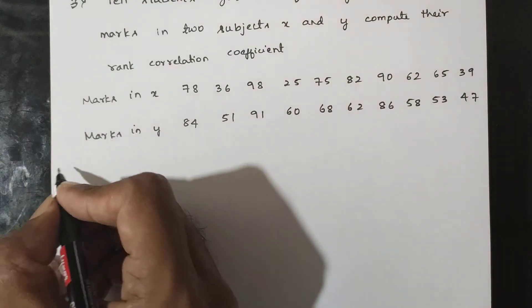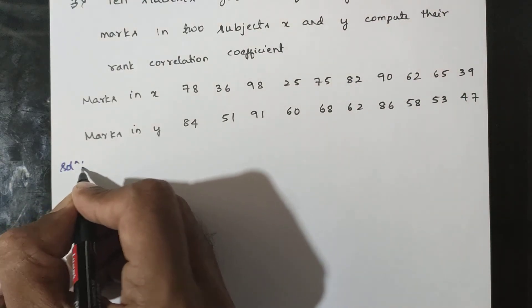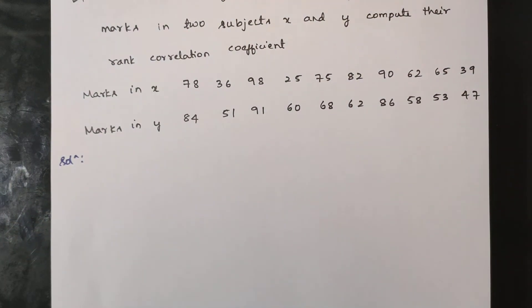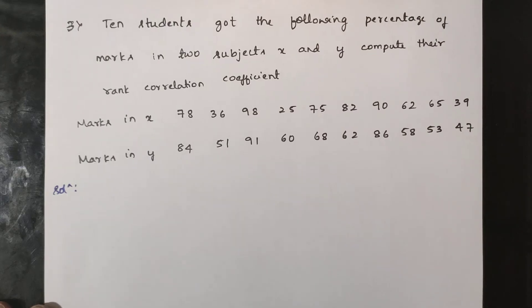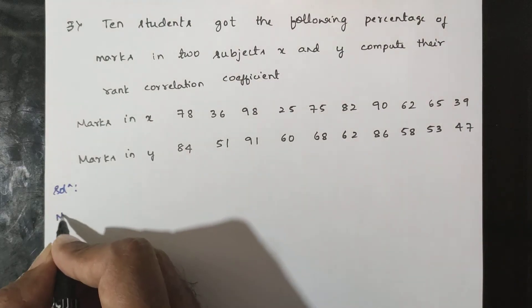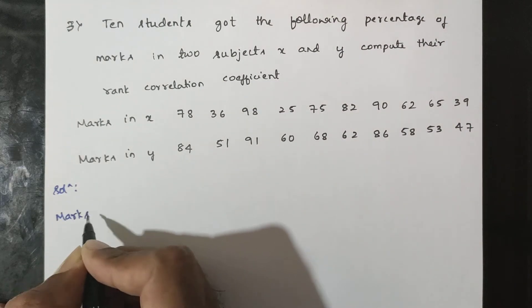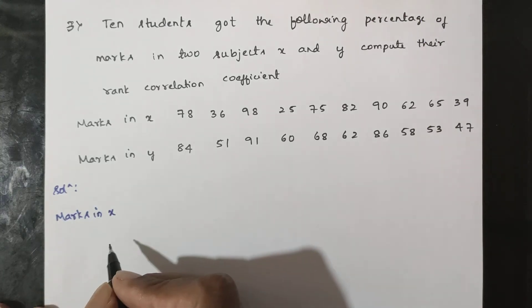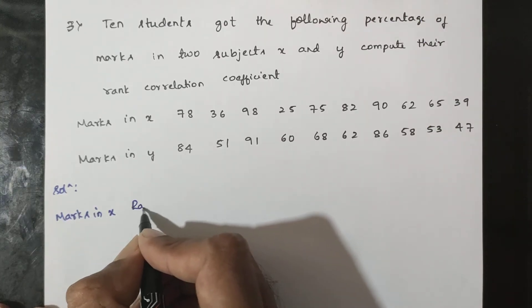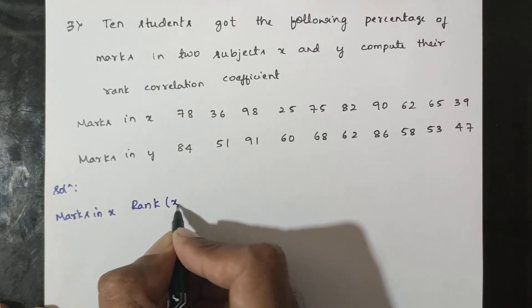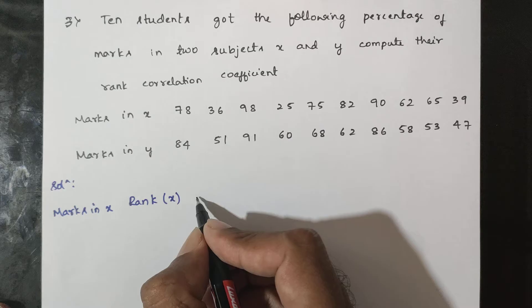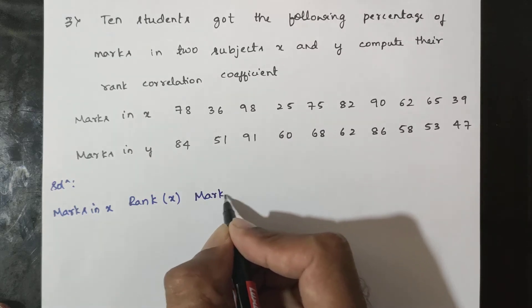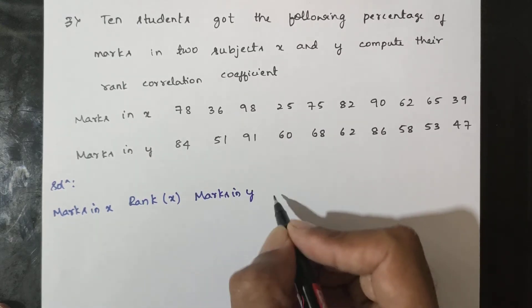What do we do? First, we set up columns for marks in X, rank in X, marks in Y, rank in Y, and the difference in ranks.